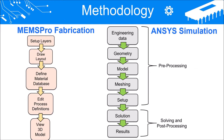Simulation of this project is divided into two parts, which is ANSYS and MEMS-PRO simulations, whereby the fabrication process is simulated in MEMS-PRO for 3D model generation, whereas the total deformation of the sensor upon input pressure exertion is simulated in ANSYS. MEMS-PRO simulation consists of five main steps: setup layers, draw layout, define material, edit process definitions, and finally 3D model generation. ANSYS simulation is based on the seven steps of finite element analysis, which is engineering data, geometry, model, meshing, setup, solutions, and finally results.